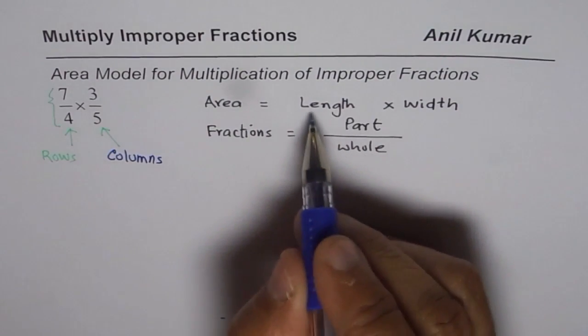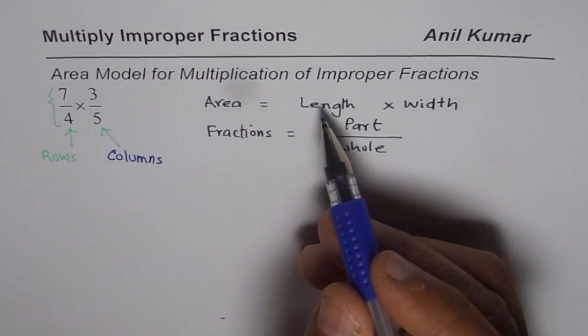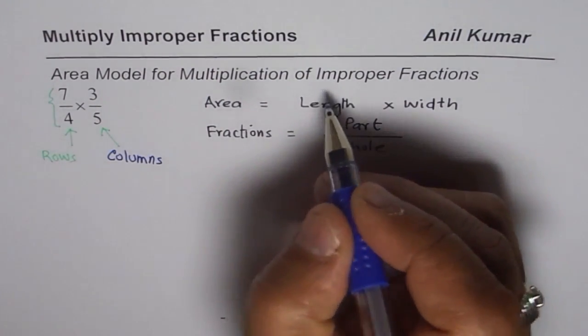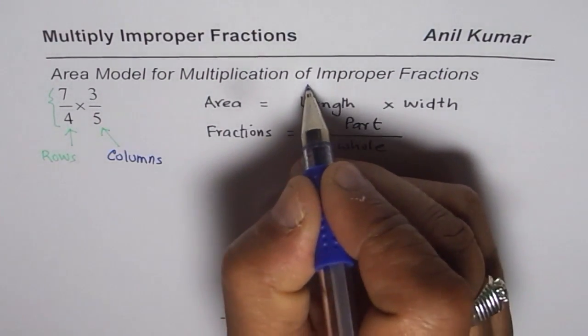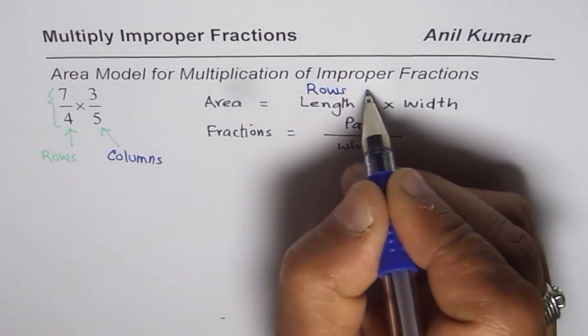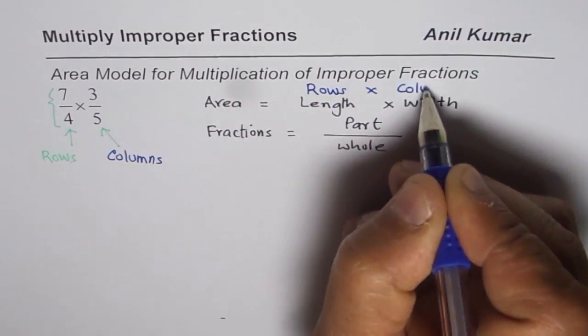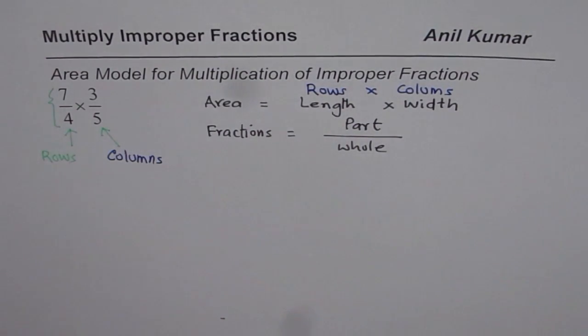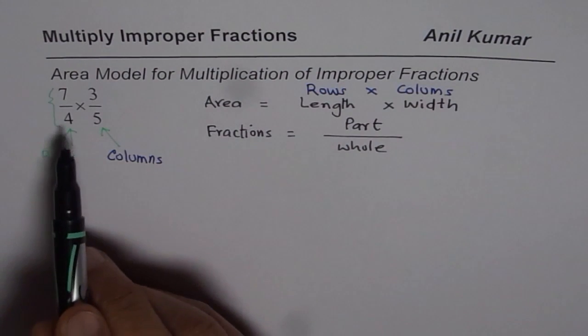Area, length and width, when we talk about fractions could also be written as rows times columns. So we could write rows times columns. Either way, both when multiplied will give you area.